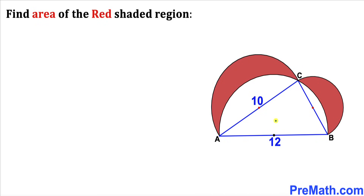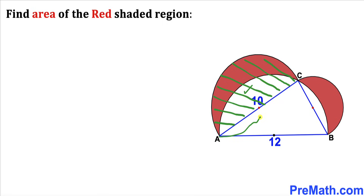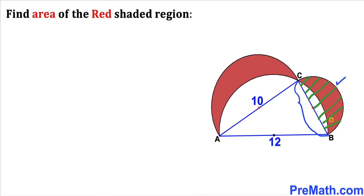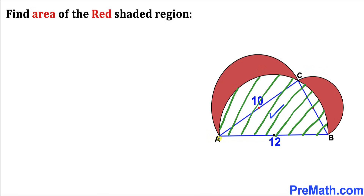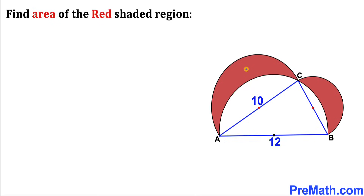In this video we have got triangle ABC whose side lengths are 10 and 12 as you can see in this diagram. Moreover, we have three semicircles: the first semicircle whose diameter is AC, the second semicircle whose diameter is BC, and the third semicircle whose diameter is AB. Our task is to calculate the area of this red shaded region — this one and this one as well.